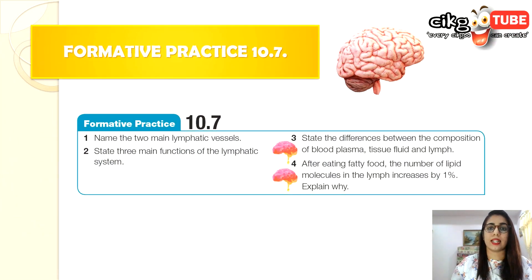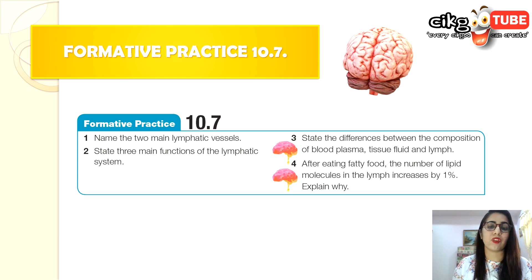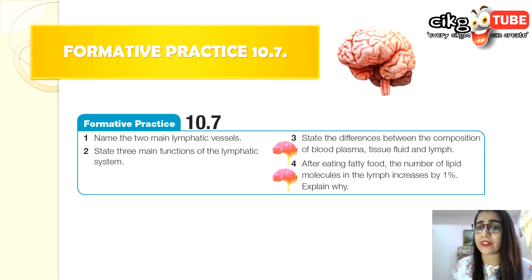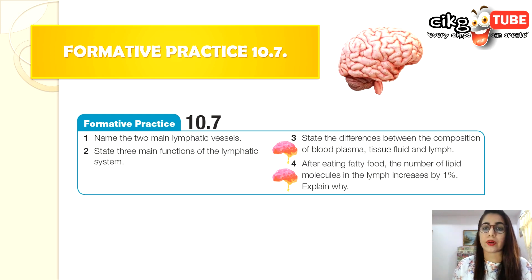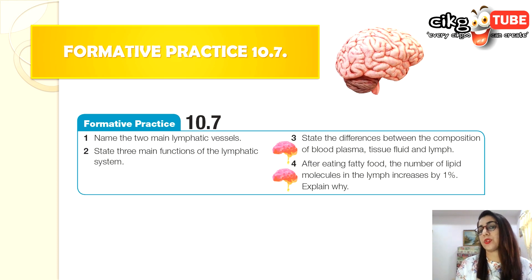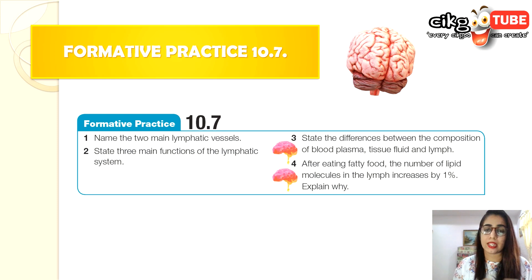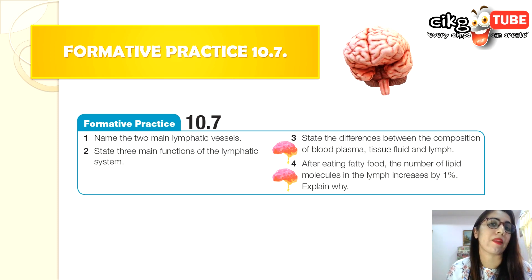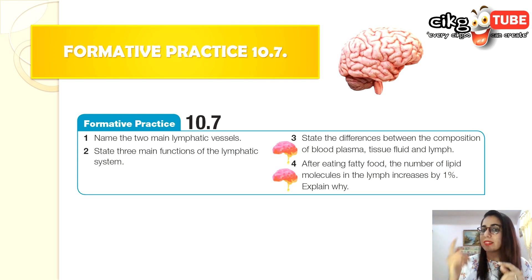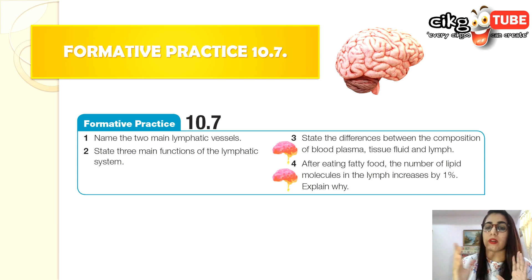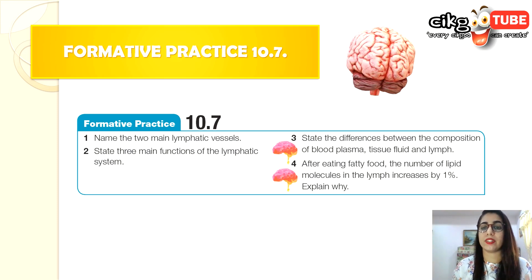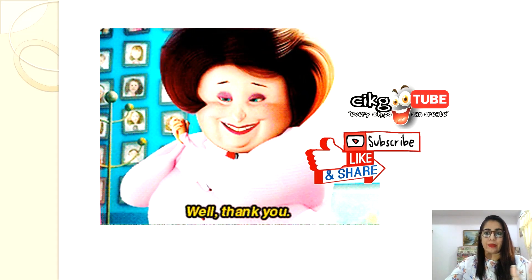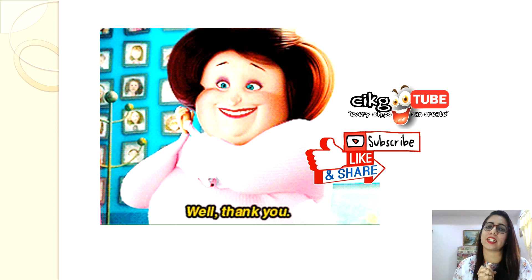Now go and complete formative practice 10.7. The questions include: name two main lymphatic vessels; state three main functions of the lymphatic system; state the differences between the composition of blood plasma, tissue fluid, and lymph; and explain why after eating fatty food the number of lipid molecules in the lymph increases. Use the concepts covered in this subtopic to answer. Thank you for watching — please like and subscribe to my channel.